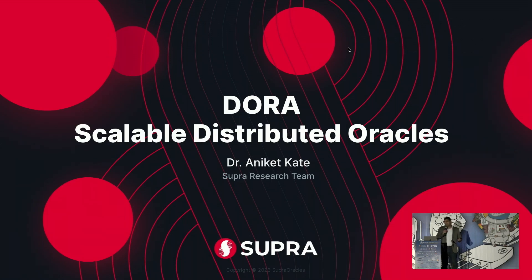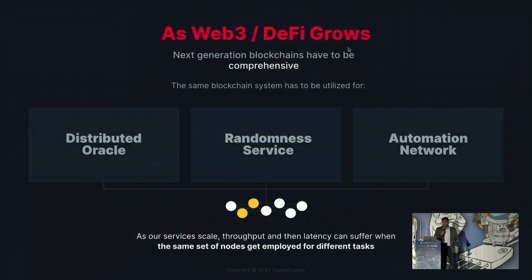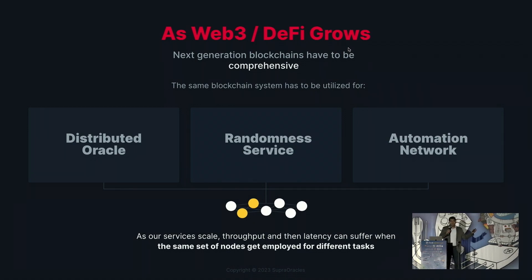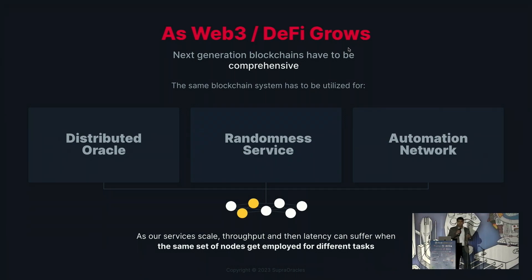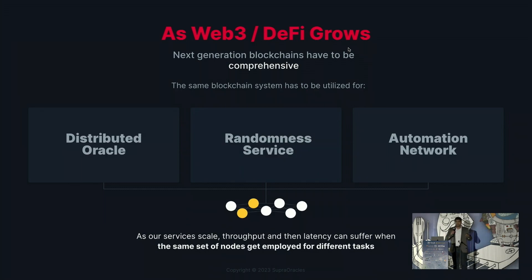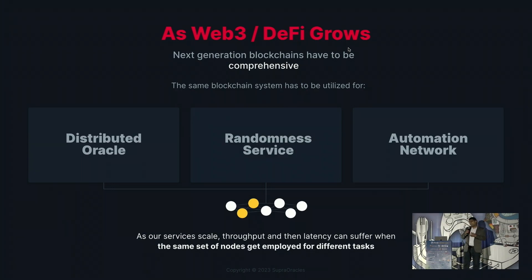Let's start with the word scalable and first establish why we need scalability in the blockchain space. As Web3 and DeFi function more and more, we're going to use the same system for doing different tasks — not only agreeing on consensus and smart contracts, but also running oracle nodes, providing randomness services for games, as well as automation where we want to allow account abstraction and all sorts of different things. Once we keep adding these services, these nodes will be overwhelmed.